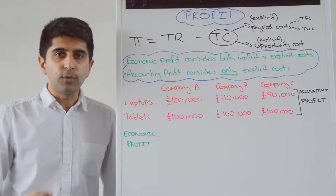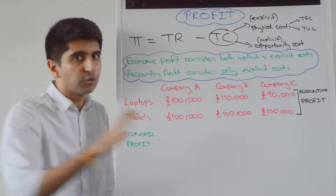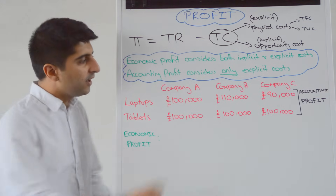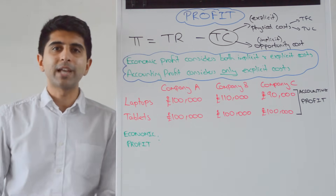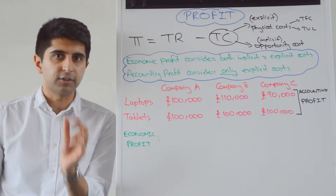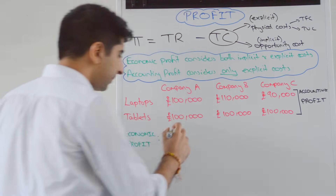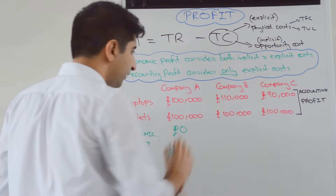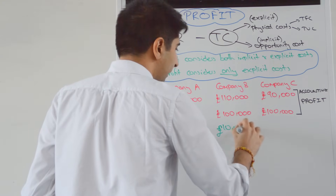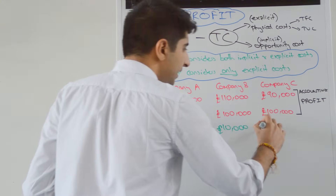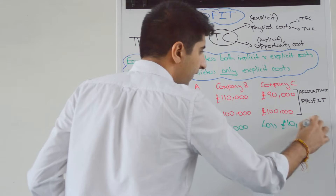An economist would disagree. They're currently making laptops and their profits are those three values. An economist would say: use those three numbers, but you also need to take into account the opportunity cost of production. Doing so gives you these three levels of economic profit. For company A, an economic profit of zero. For company B, an economic profit of £10,000. And for company C, a loss of £10,000.